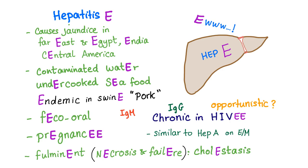Hepatitis E — remember EW. It causes jaundice in the Far East, Egypt — and by Egypt I mean Africa, and by the way, Egypt is my home country — India, and Central America.